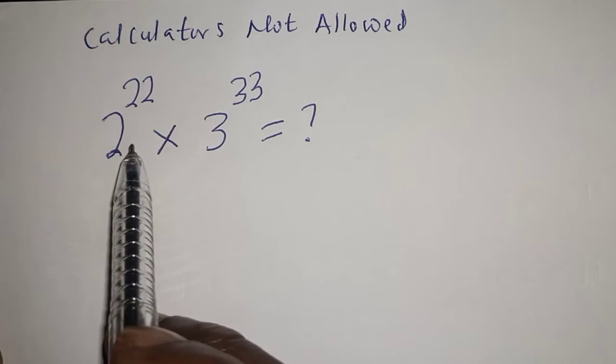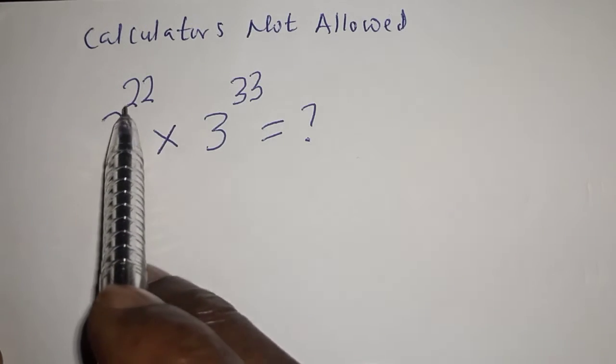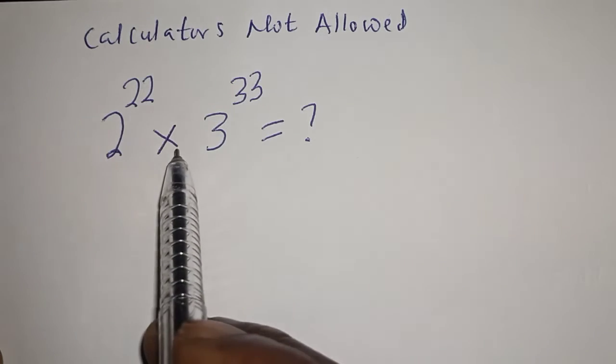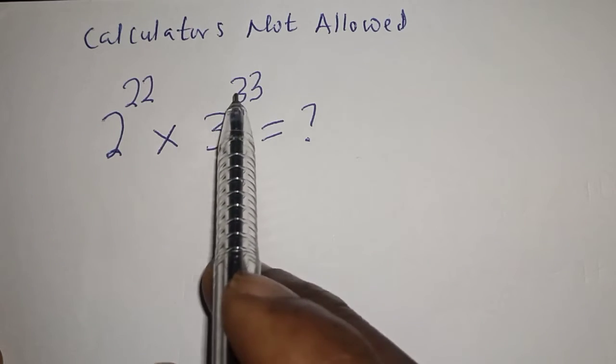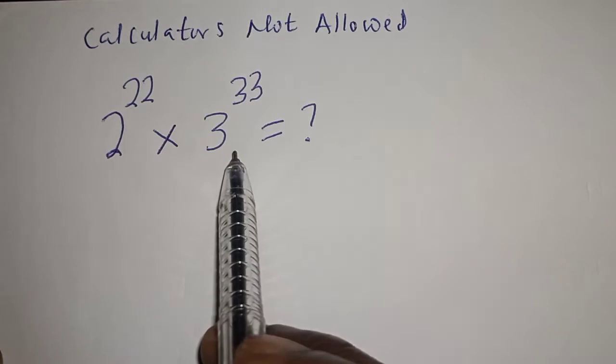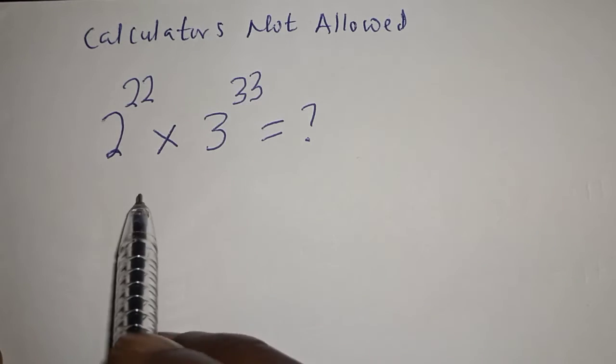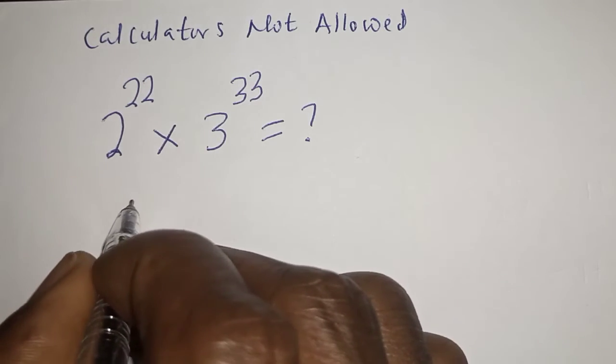How to simplify this nice math problem: 2 raised to power 22 multiplied by 3 raised to power 33, without using a calculator.